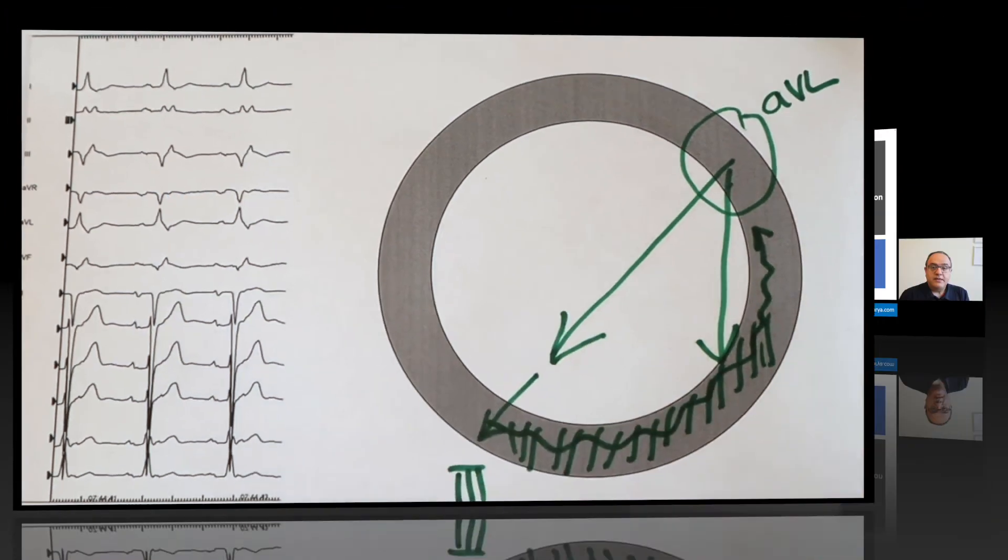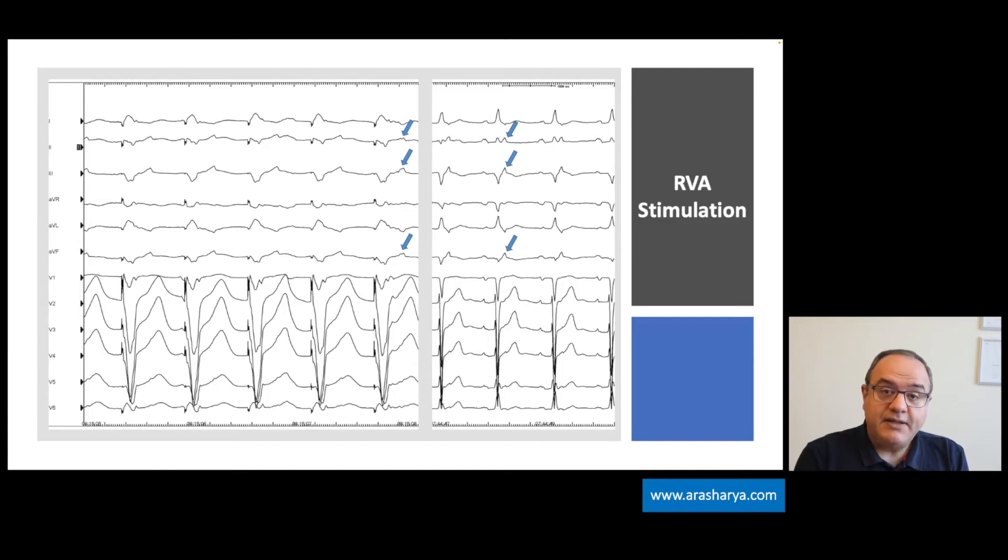Here we have the ECG on the left side during RVA stimulation, and you can see this delayed activity is more prominent. And actually, these deflections look like they happen way after termination of the QRS complex. Actually, it is just an apparent QRS complex, and this deflection is still part of the QRS complex, but because of very late activation after RVA stimulation, we can see the latest activation of basal inferior posterior superior part of the left ventricle.